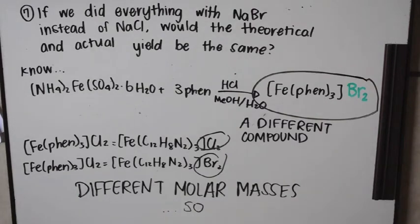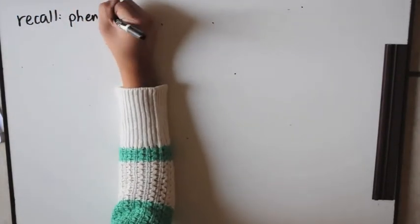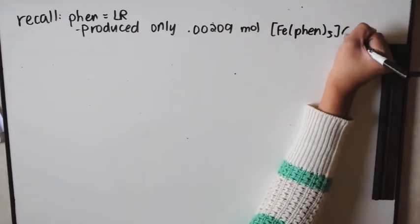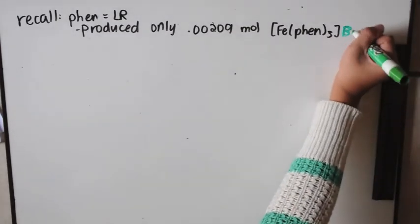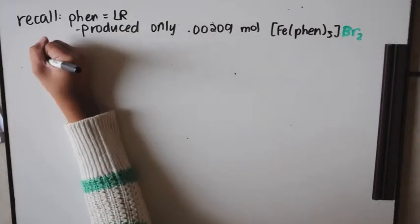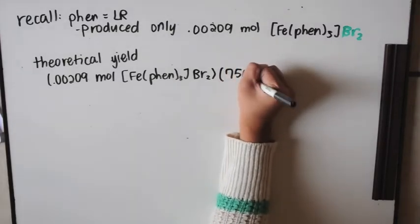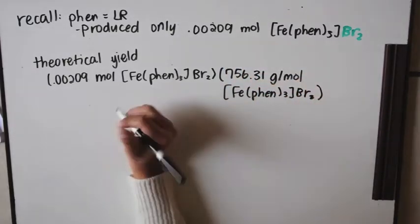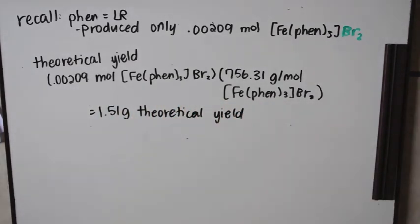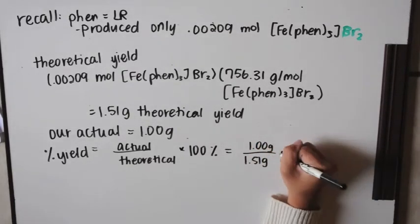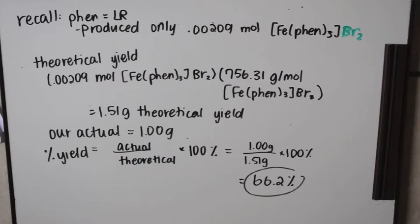Theoretical and percent yields would differ because you multiply the limiting reagent moles by the new molar mass. The limiting reagent is still phen at 0.00209 moles. Multiplying by the new molar mass of 756.31 g/mol gives a theoretical yield of 1.51 grams. Percent yield would then be 1 ÷ 1.51 × 100 = 66.2%.